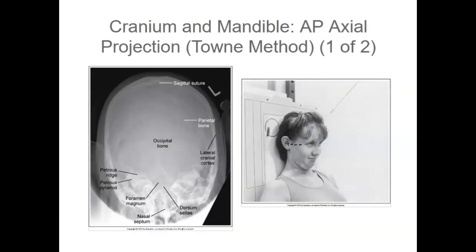Image analysis guidelines for the cranium and mandible Towne method state that the distances from the posterior clinoid process to the lateral borders of the foramen magnum on both sides, and the mandibular neck to the lateral cervical vertebral breadth on both sides, are equal. The petrous ridges should be demonstrated as symmetrical, and the dorsum sellae should be at the center of the foramen magnum.